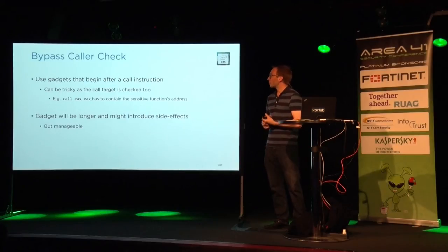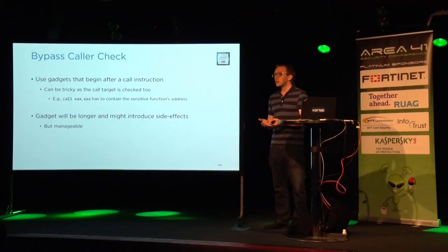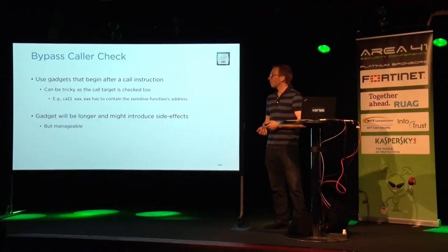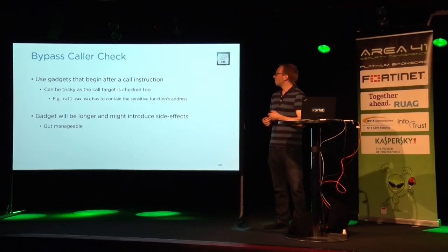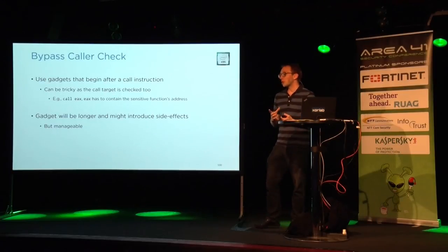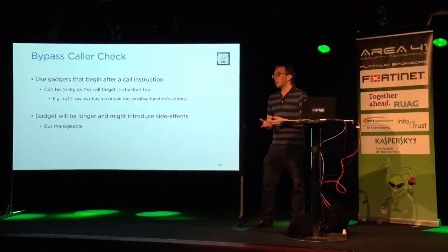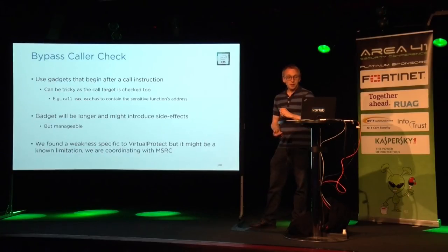How do we bypass caller checks? To bypass caller checks, we use gadgets that begin after a call instruction. This may be tricky — your ROP gadgets may become larger and more complex. We also found some issue with caller checks that we cannot talk about yet.